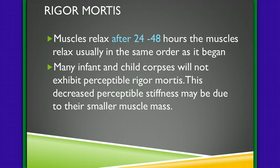Rigor mortis: the muscles actually relax after 24 to 48 hours, and it occurs in the same order as it began. Those smaller muscles are going to relax and soften first — the eyelids, the neck, the jaw — and then gradually moving on to those larger muscles like those in the legs. Many infant and child corpses don't even exhibit perceptible rigor, because their muscles are so much smaller that it's hard to tell they're actually going through rigor mortis.